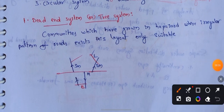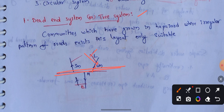First, the dead-end system or tree system. A supply main starting from the service reservoir is led along the main road. This main pipeline has sub-mains on both sides, sub-mains have branches, and branches are laterals. This is a dead-end system.